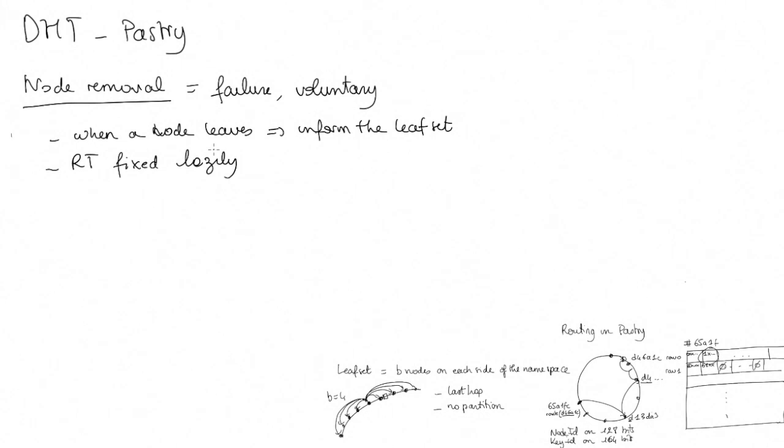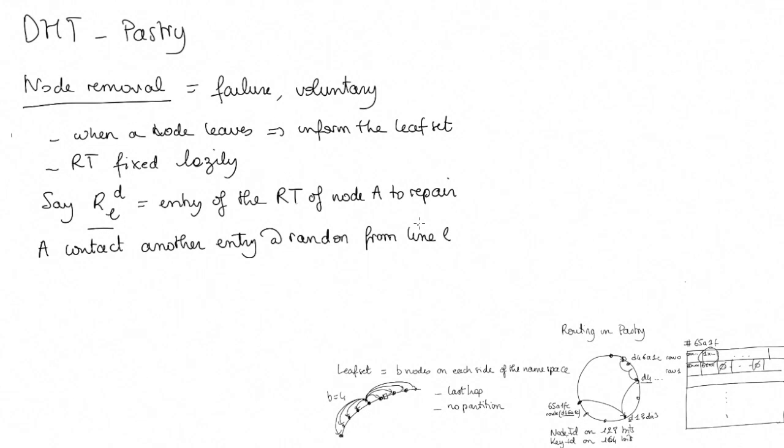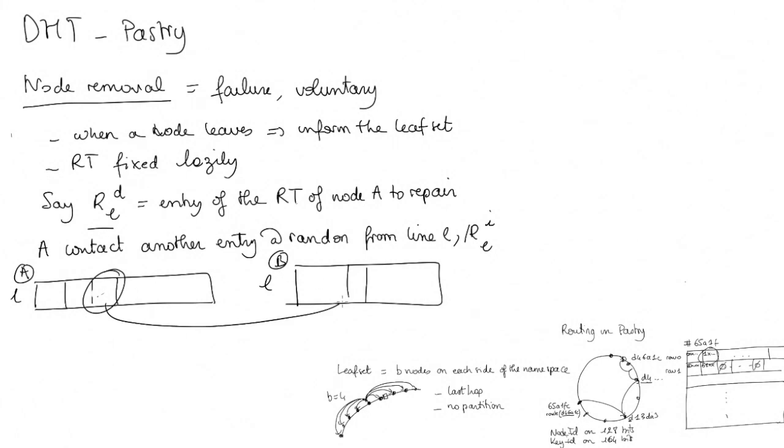The fact that the routing table is fixed in a lazy manner means that whenever a node that has left the system is encountered during a routing operation, it's fixed at that moment. Say node RLD is the entry of the routing table of node A to repair. A will contact another entry at random from the same line L, so that I is different from D. Node A asks B to provide the node present in its corresponding entry, and then fixes that entry with that same node X. Note that if that cell is also empty, A will contact another entry in the same line, or otherwise another entry for a different line until it finds a node.